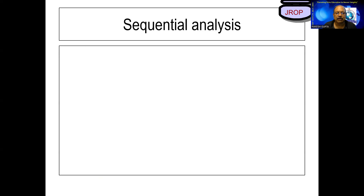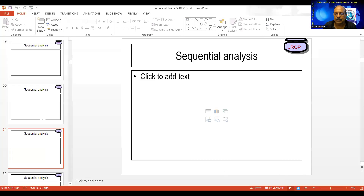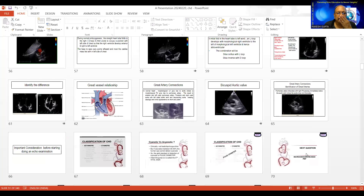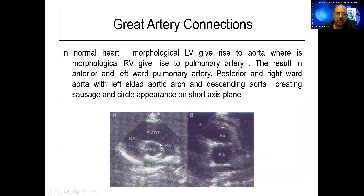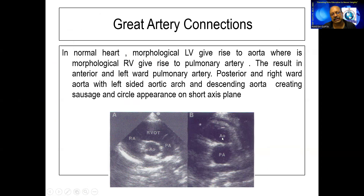Next comes great vessel connections. To understand great vessel connections, we go to the short axis view. In a normal picture, the aorta is right in the center and the pulmonary artery wraps around the aorta to bifurcate into the right and left pulmonary arteries. In transposition of the great vessels, we do not see this wrap-around; instead we see two small parallel vessels lying close to each other. When you see two parallel vessels close to each other, think of transposition of the great vessels.